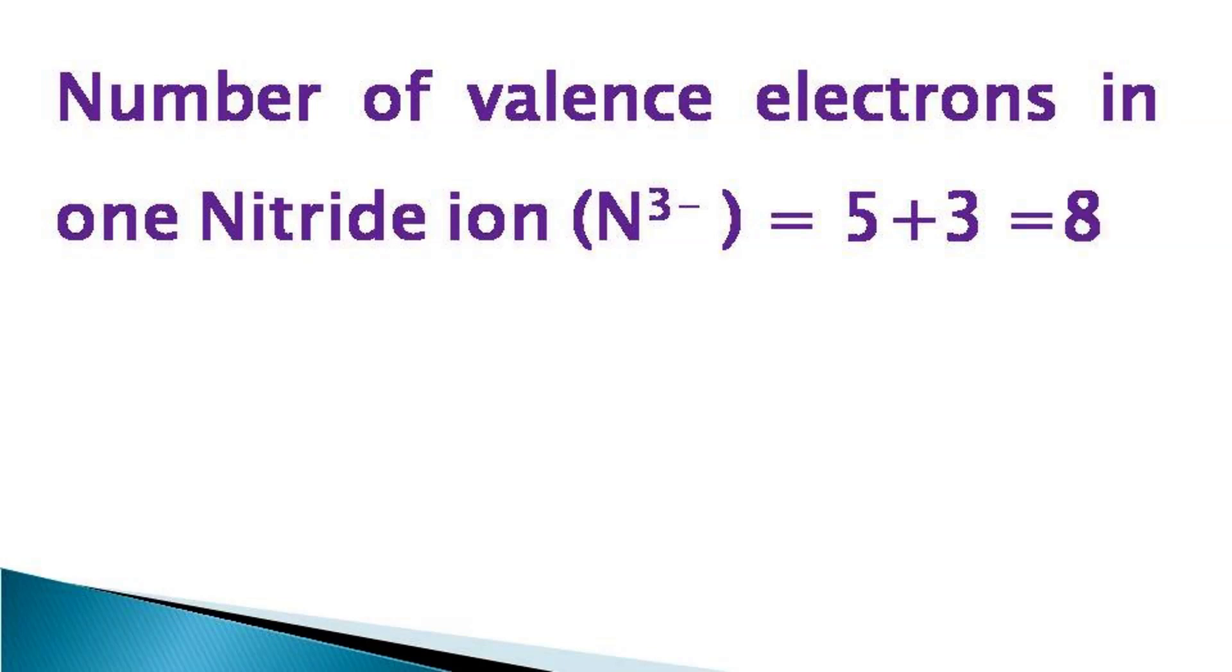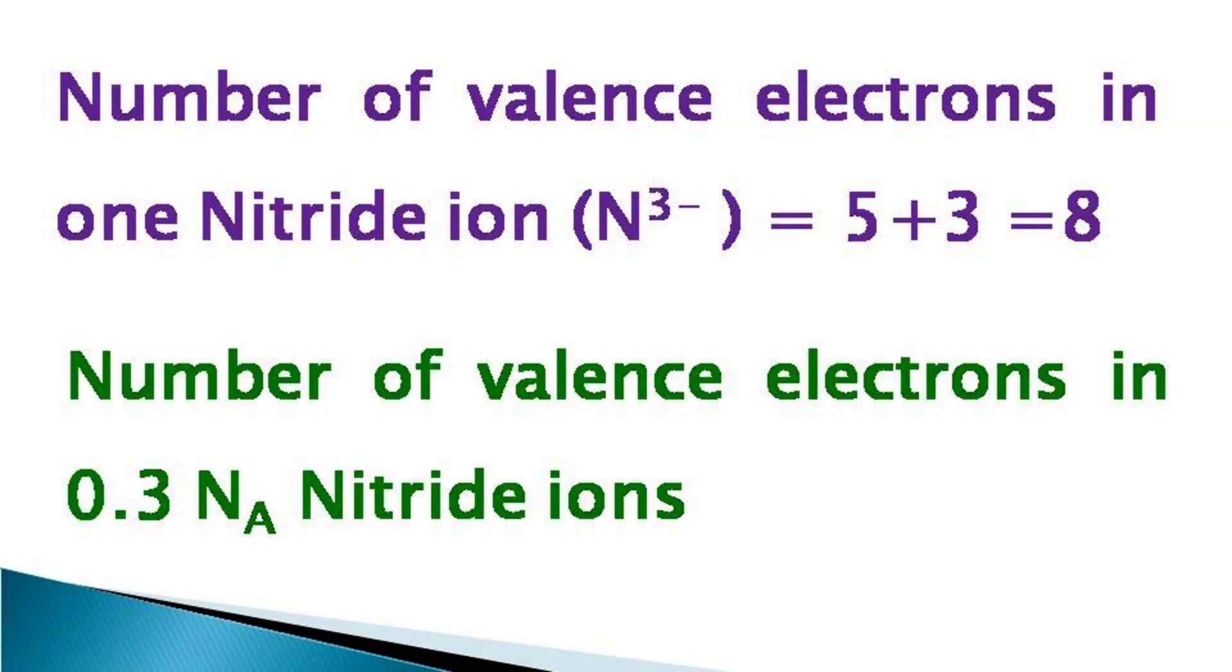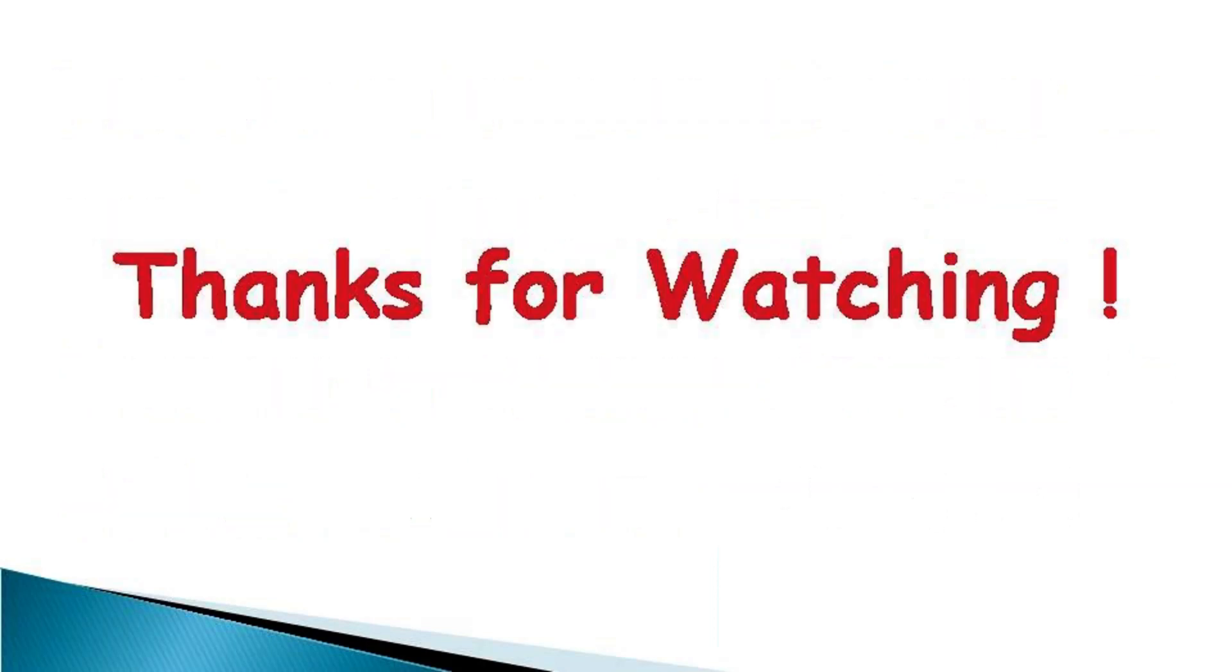Then we calculate the number of valence electrons in 0.3 Na nitride ions, which we have already calculated as the number of nitride ions in the given mass. It becomes equal to 0.3 Na times 8, which is equal to 2.4 Na. That is our required answer. Thanks for watching.